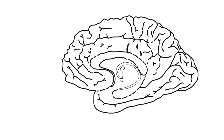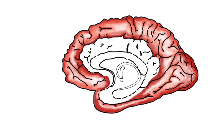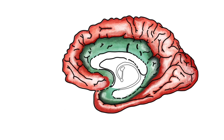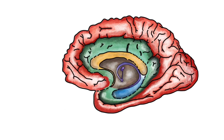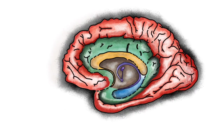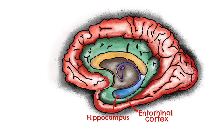Let's start by orientating ourselves. Here we're looking at a medial view of a sagittal section of the brain. The Papez circuit is a loop within the limbic system. The circuit both starts and ends with the hippocampus, hence it being called a circuit. Here you can see that coloured in blue.